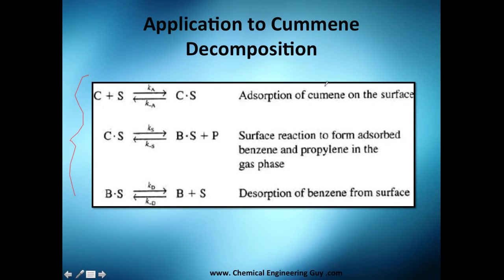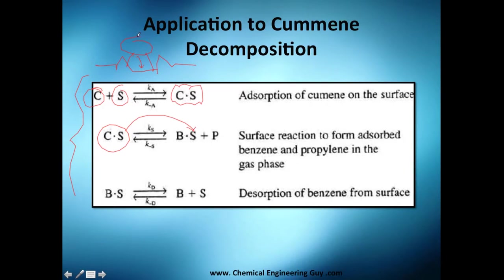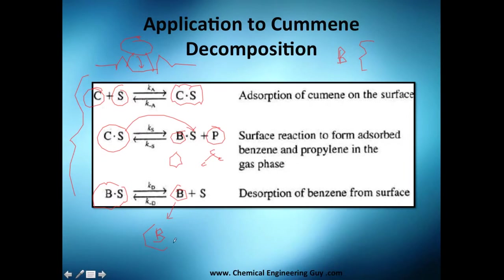Adsorption of Cumene on the surface: you have Cumene, you have the active site, Cumene comes and binds to the active site. Then we're going to use this active site to produce B, which is essentially two products — benzene stays on the binding site and propylene is released.